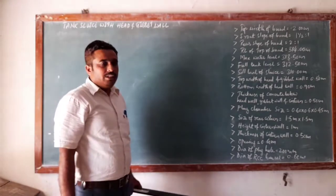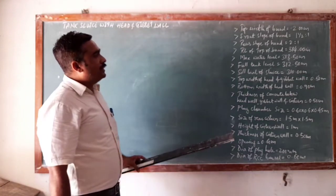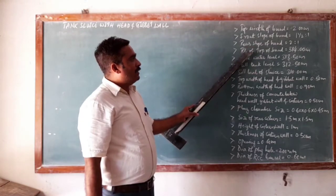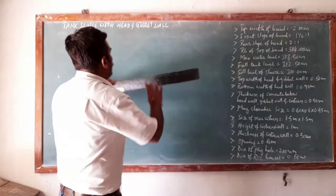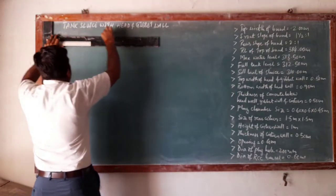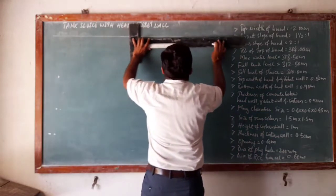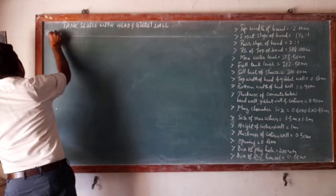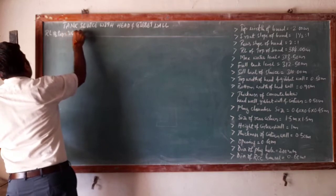To begin with the first view — that is the longitudinal section of the tank sluice — we need to first mark all the given levels in descending order, starting from the top. We need to mark all levels with faint lines. Beginning with the top, the RL of the top of the bund is 314 meters. The next level is the maximum water level, which is 313.50 meters.